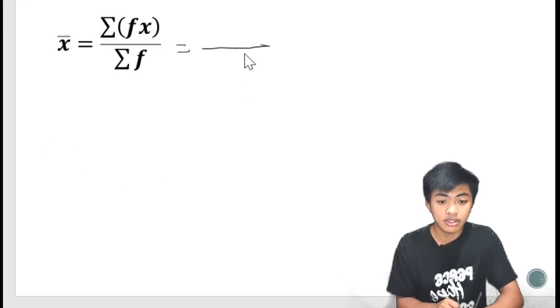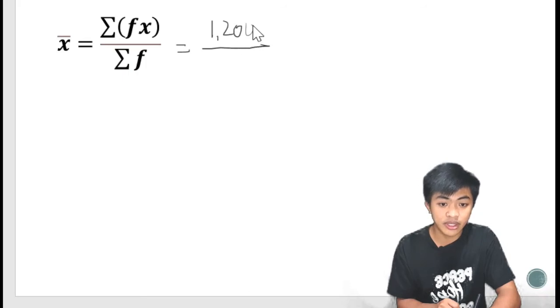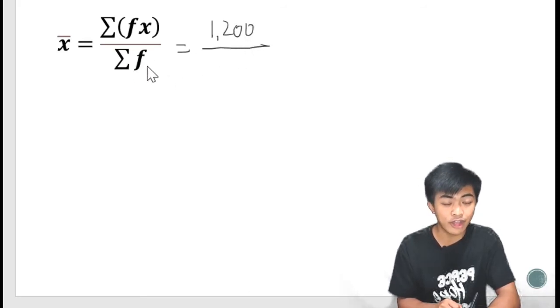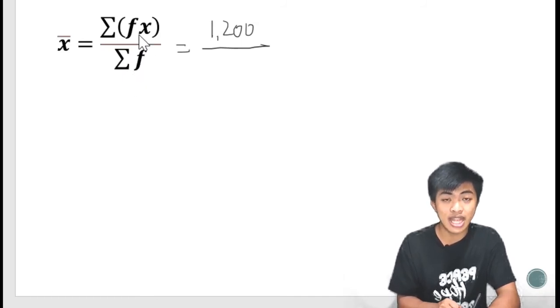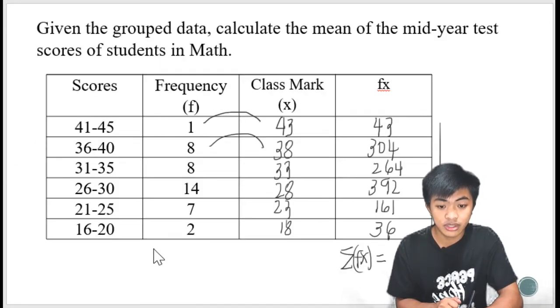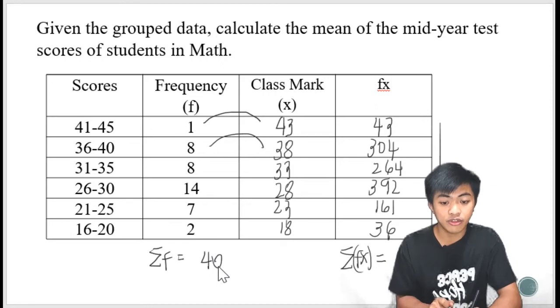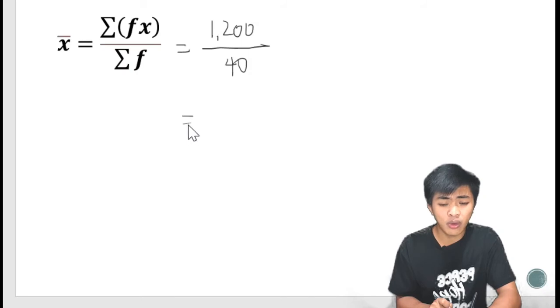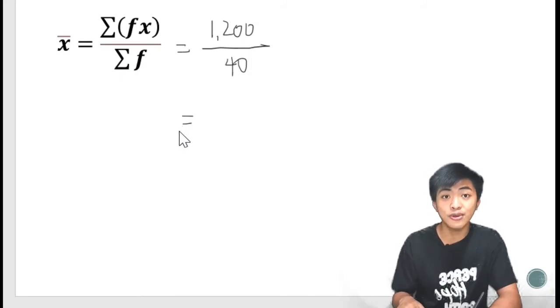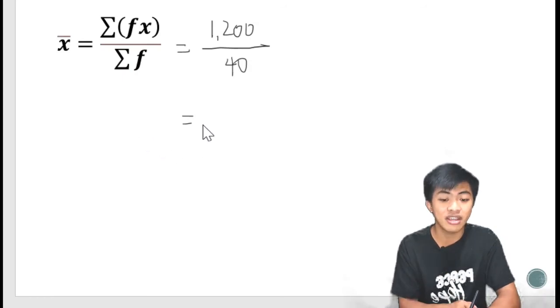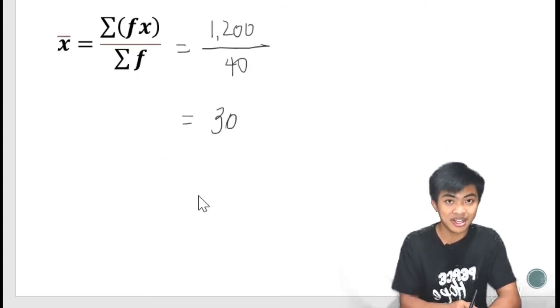Now, 1,200. Now, kailangan naman natin yung summation of f. So, pag-addin lahat natin yung mga values na nasa f column or yung column ng frequency. Summation of f. 40 yung population size natin dito. So there are 40 data all in all, here. Summation of f is 40. And if we are going to divide that, makukuha na natin yung mean. So dividing that, we will be having an answer of 30. So the mean of the mid-year test scores of students in mathematics is 30.